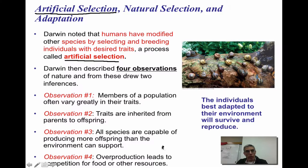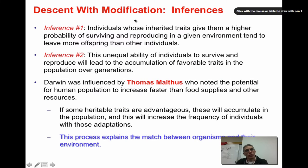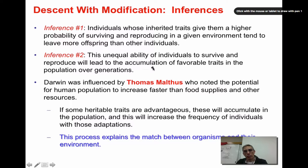Observation number four is that overproduction leads to competition for food and other resources. Without competition, the whole idea of survival of the fittest probably will not happen. From his four observations, Darwin drew two inferences. The first was that individuals whose inherited traits give them a higher probability of surviving and reproducing do tend to leave more offspring than other individuals. The second inference was that this unequal ability of individuals to survive and reproduce leads to the accumulation of favorable traits in the population over many generations.